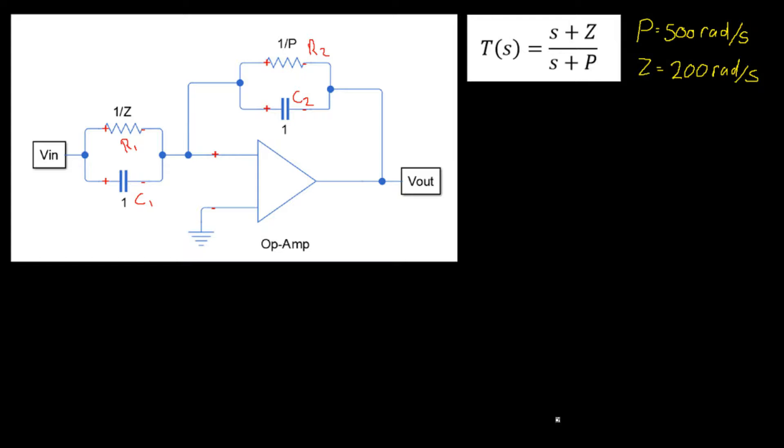So what have we been given? Today we've been given a circuit, we've been given the way in which those components relate to one another and how they impact the poles and zeros of the transfer function. Lastly we're given the transfer function itself and the pole and zero which is required.